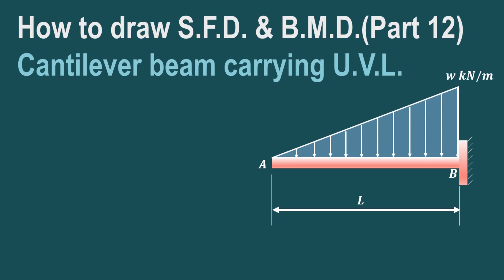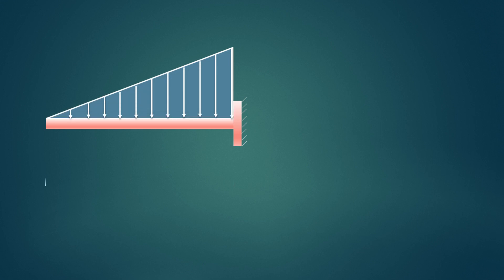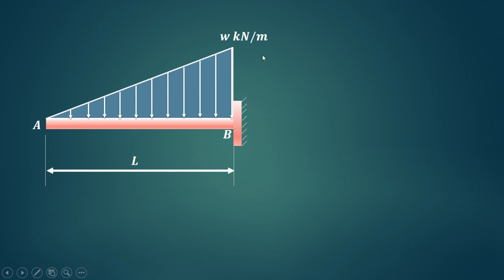In this video we'll try to understand how to draw shear force diagram and bending moment diagram in case of a cantilever beam carrying uniformly varying load. The arrangement for the beam is as shown. The span length of the beam is L and it carries a uniformly varying load of W kilonewton per meter. At x equal to 0 the load is 0, and at x equal to L the load is W kilonewton per meter.